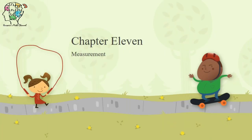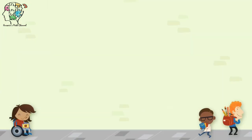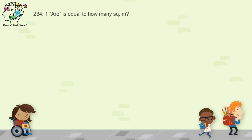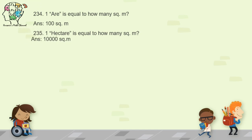Now we move to Chapter 11, Measurement. Question 234: one are is equal to how many square meters? The word is spelled A-R-E, pronounced 'are' — it is a unit of measurement equal to 100 square meters. Question 235: one hectare is equal to how many square meters? One hectare equals 10,000 square meters.